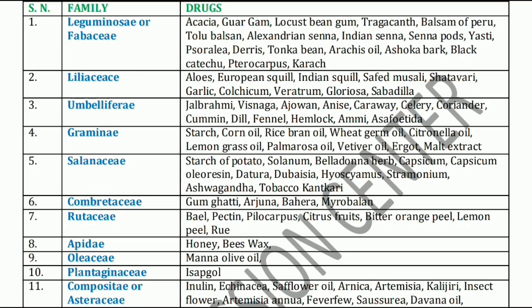Next, Alexandrian senna, Indian senna, and senna pods — these are anthraquinone glycosides. Also Yashti, Sorelia, Dairies, Tonka bean, Arachis oil, Ashoka bark, Black Catechu, Pterocarpus, and Karach. All these plants come under the Leguminaceae family.